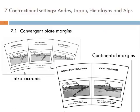Along continental margins, we are looking at Andean-type situations where we have shallow subduction and contraction of the continental back arc. In the Sumatra-Java situation and also the northwestern United States in the recent geological past, we see extension in the back arc, and that is related to steep oceanic subduction.